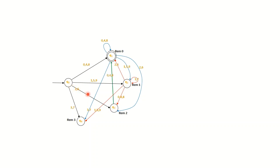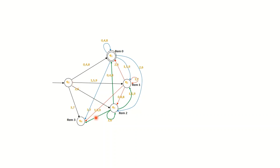From q3, on reading 2 or 6 you go to q3 (remainder 2). On reading 0, 4, or 8 from q3 you go to remainder-0 state q1 — for example, 20 has remainder 0; 64 has remainder 0. On reading 1 or 5 or 9 from q3 you get remainder 1 — for example, 21 has remainder 1; 69 has remainder 1. On reading 2 or 6 you get remainder 2 — for example, 22 has remainder 2; 62 has remainder 2. On reading 3 or 7 you get remainder 3 — for example, 23 has remainder 3; 63 has remainder 3.